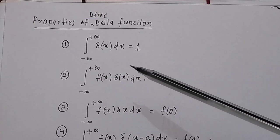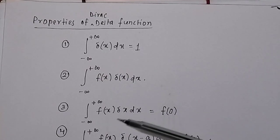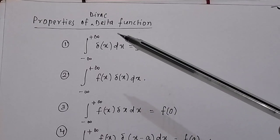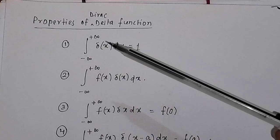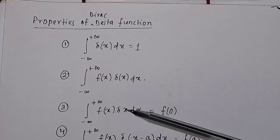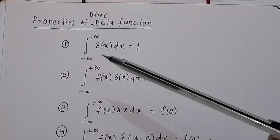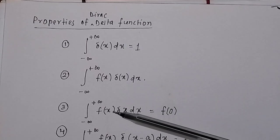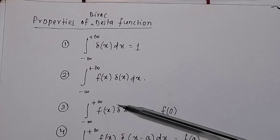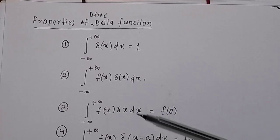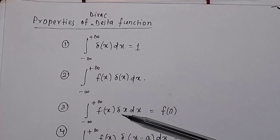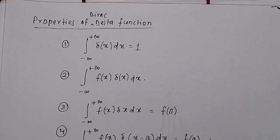The third property states: the integration from −∞ to +∞ of f(x) δ(x) dx = f(0). Since the Dirac delta function is only defined at x = 0 and the area equals 1, the integral evaluates the function f(x) at x = 0, giving f(0).